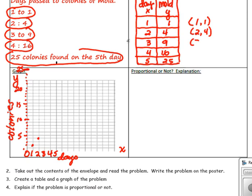And then our third ordered pair is three, nine. Over three and up to nine. Our ordered pair is four, sixteen. Over four and up sixteen. Over five and up twenty-five.